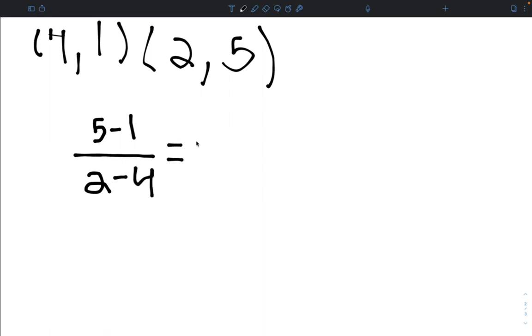5 minus 1 equals 4, and 2 minus 4 equals negative 2. And this can be simplified into negative 2. So that means our slope of the line between these two points is negative 2.